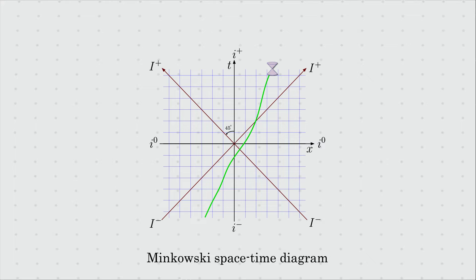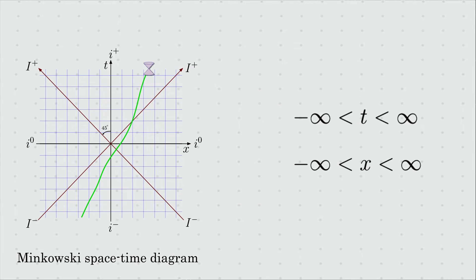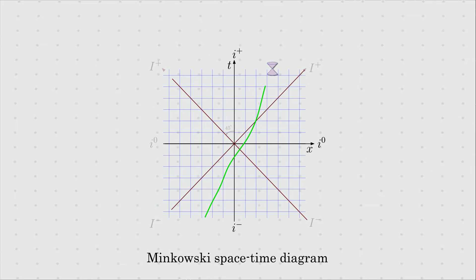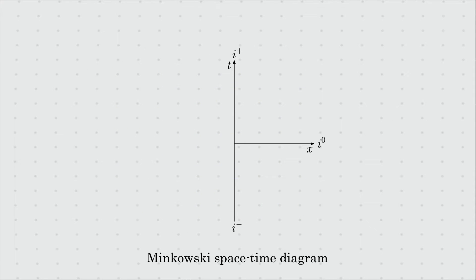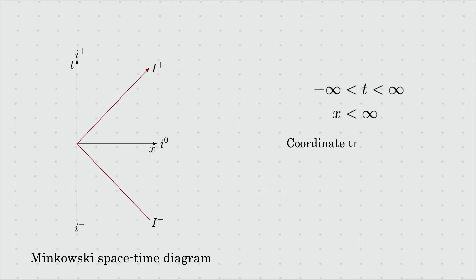The simplest example is a flat space-time diagram called the Minkowski space-time diagram. The Minkowski space-time is without any gravity and thus flat. The space and time axes range from minus infinity to plus infinity. While the tan function on x and t can bring it to a finite region, the new coordinate doesn't satisfy the second condition: that light rays should move at a 45-degree angle. We can obtain that too by transforming space and time into a new coordinate known as the light cone coordinate.